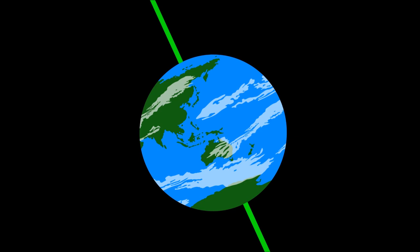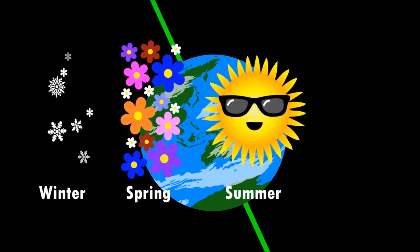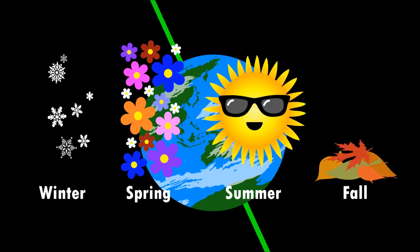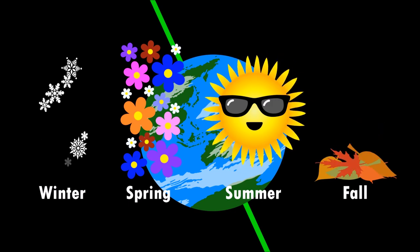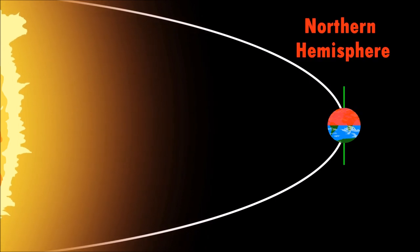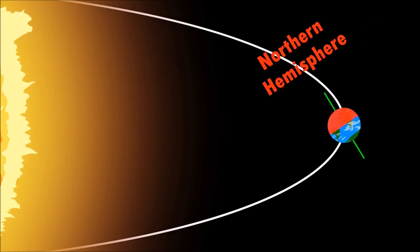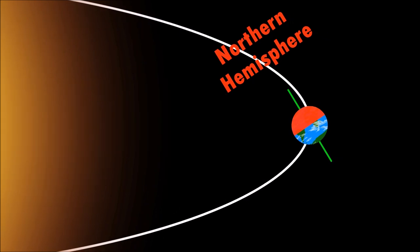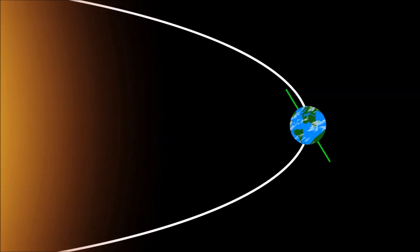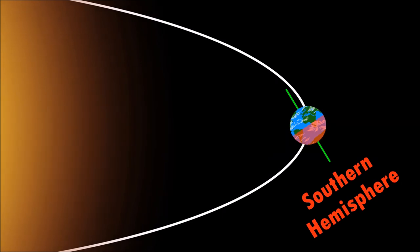The Earth's axial tilt is why we have different seasons. When the top half of the Earth, called the Northern Hemisphere, is tilted towards the Sun, the Northern Hemisphere experiences summer, whereas the Southern Hemisphere experiences winter.